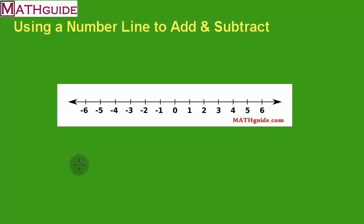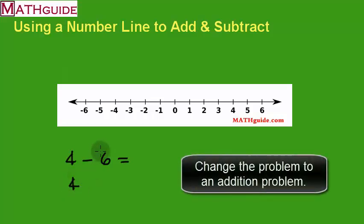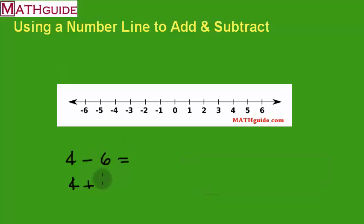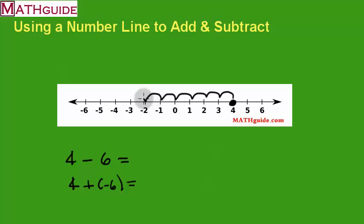Let's do another one: four minus six. First thing I do is change this to an addition problem — keep the first number the same, change the sign to addition, and take the opposite of six. The opposite of positive six is negative six. Now on the number line, I start at four and move six units to the left. One, two, three, four, five, six. The answer is negative two.